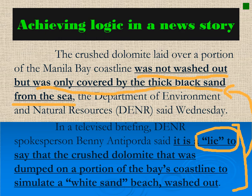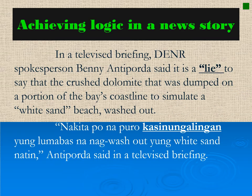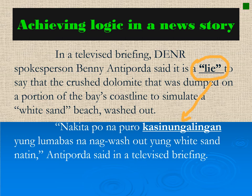Now let's look at how the second paragraph is supported by the succeeding paragraphs. The key element in the second paragraph is that it was a lie — the claim made by critics is a lie. The next paragraph should support this statement and show why it is a lie. The next paragraph is a direct quoted statement from Antiporda: 'Nakita po na puro kasinungalingan yung lumabas na nag-wash out yung white sand natin.' You have the word 'lie' in the previous paragraph, and it is emphasized in the next paragraph with 'kasinungalingan.' There is a clear connection between and among the paragraphs.